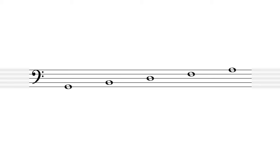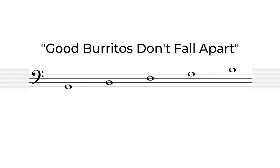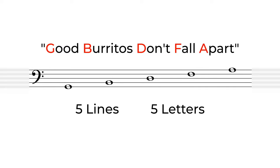Let's start with the lines. We have a simple phrase to help us know where our notes go: Good burritos don't fall apart. There are other phrases that music educators use, but this one is very commonly used and it's a fun one. We take the first letter of each word — G, B, D, F, and A. Five lines, five letters.